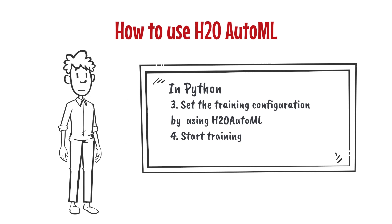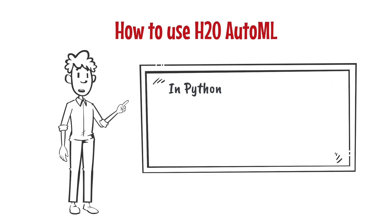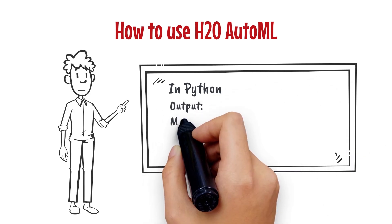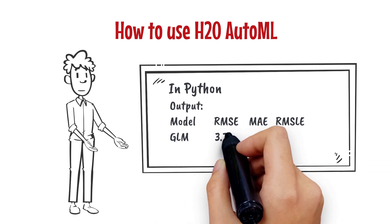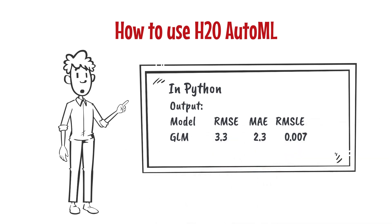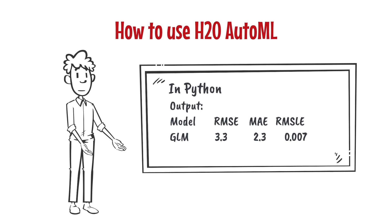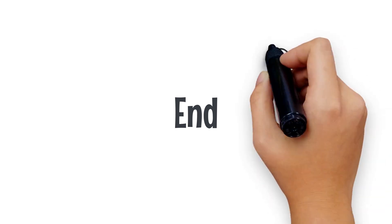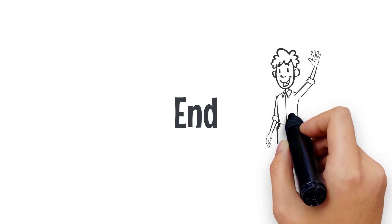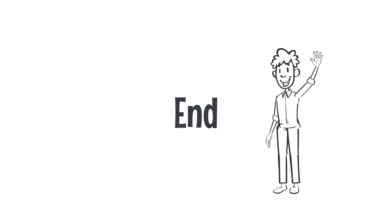And then you can start your training. After the training is done, the output will show the names of models and the criteria that can be used to decide the performance — for example, the root mean square error. That's my introduction to the H2O AutoMachine Learning Library. Bye-bye!